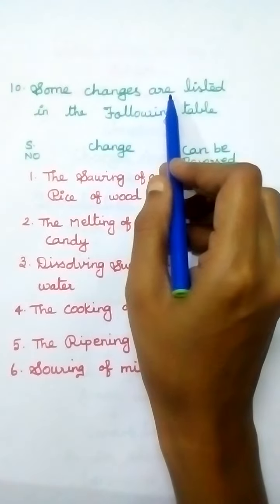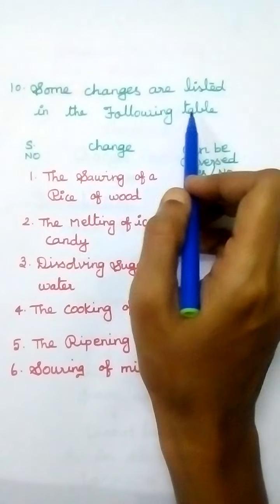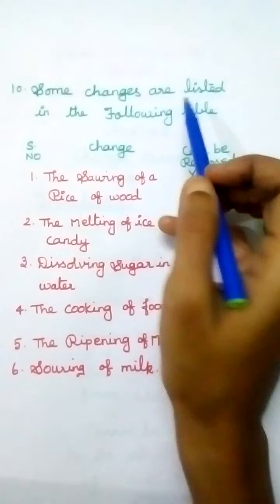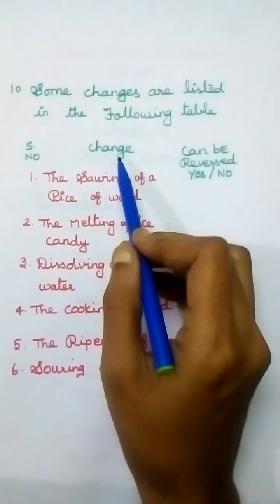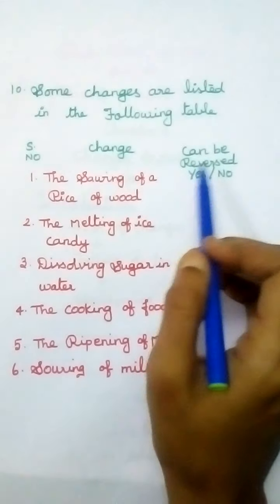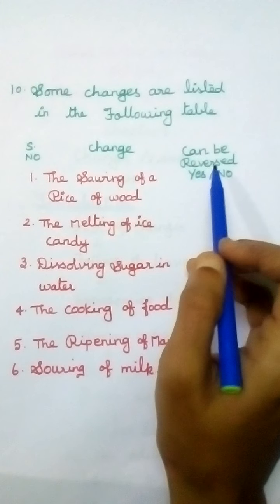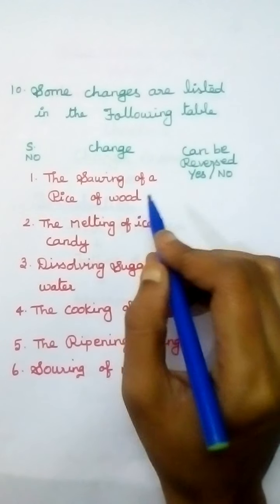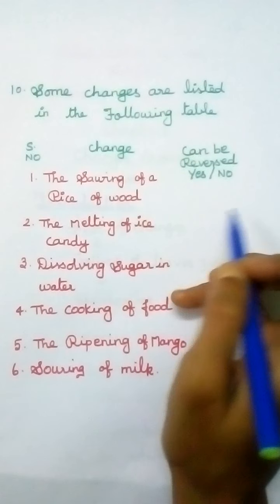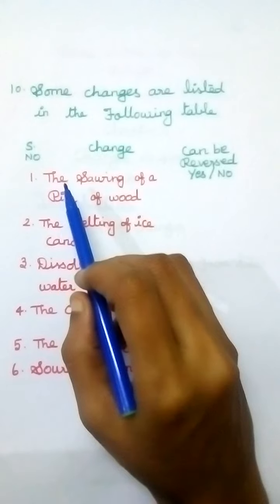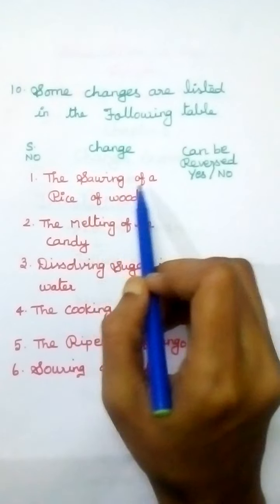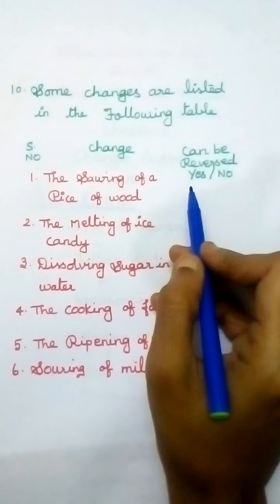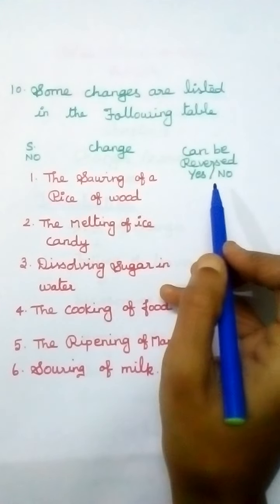Tenth question: Some changes are listed in the following table. The table has a serial number, the change, and whether it can be reversed — yes or no. If it is reversible write yes, if irreversible write no. First row: the spoiling of a piece of food. Can it be reversed? Yes or no — write the answer.